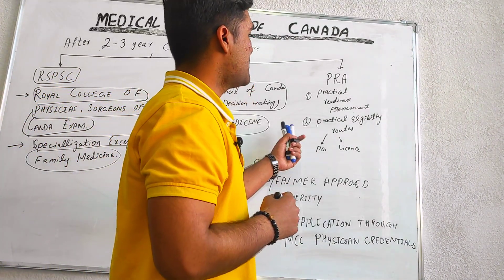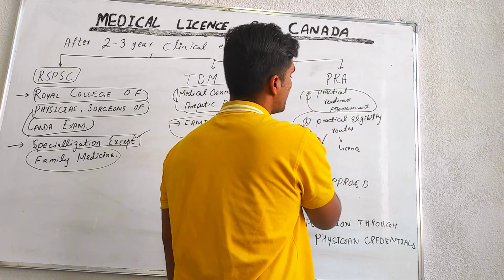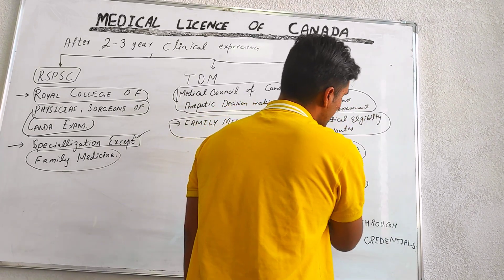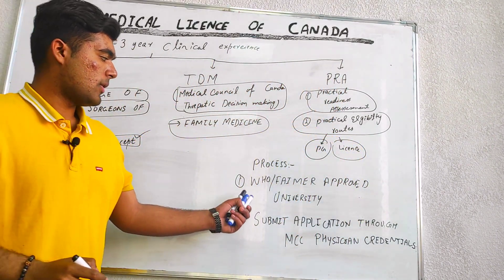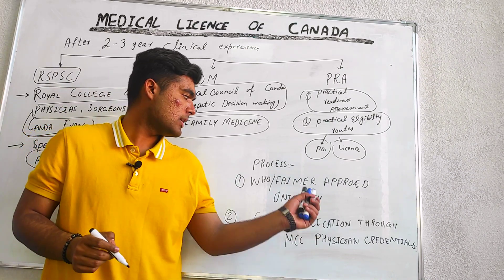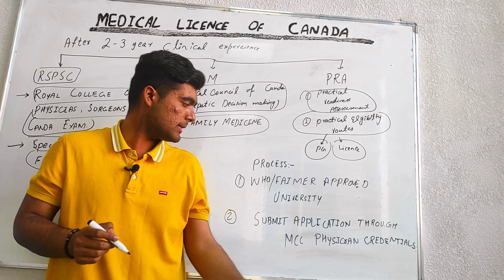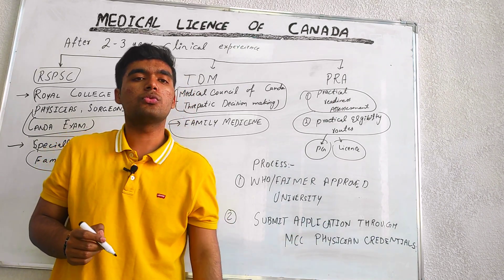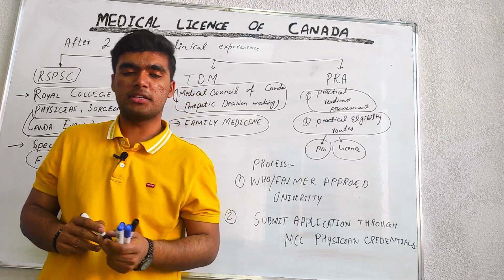The third pathway is PRA, which stands for Practice Ready Assessment and also the Practice Eligibility Route, which provides details on post-graduation and licensing. The basic requirement is a WHO-approved university, and you have to submit your application through the Canadian MCCC Physicians Credentials registry.